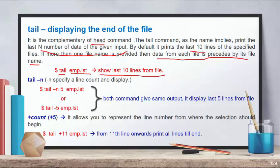You can write tail minus N followed by the file name, or tail minus 5 directly — both commands give the same output. It will show the last 5 lines from the file emp.lst.